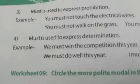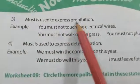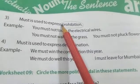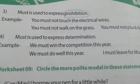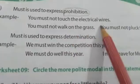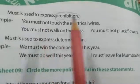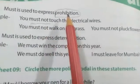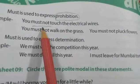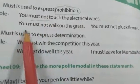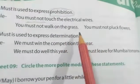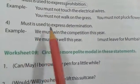The next use of must is to express prohibition — when something is not desired to happen and we want to stop someone from doing it. Example: 'You must not touch the electrical wires' — this is prohibition, we are not supposed to touch them. 'You must not walk on the grass', 'You must not pluck flowers' — in all these sentences we are prohibiting or stopping the other person from certain actions.